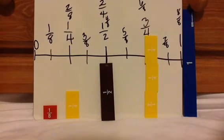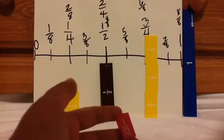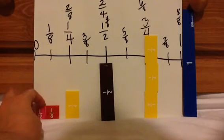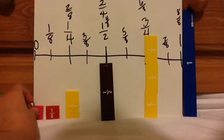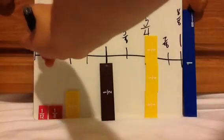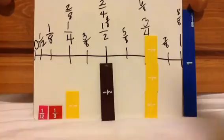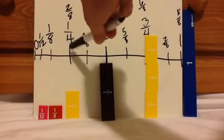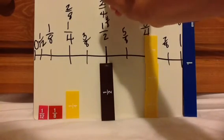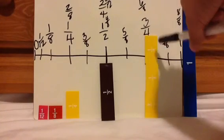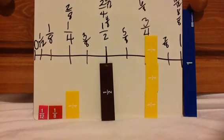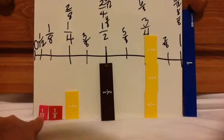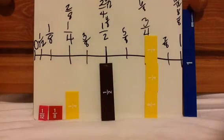Now suppose someone gave you 1 twelfth. If you notice, 1 twelfth is smaller than 1 eighth size-wise. So I know 1 twelfth is somewhere here — very close to 0. Then continuing: 2 twelfths, 3 twelfths, 4 twelfths, 5 twelfths, and 6 twelfths would be right at half. 7 twelfths, 8 twelfths, 9 twelfths, 10 twelfths, 11 twelfths, and 12 twelfths would be right at 1 whole. I'm not worried about labeling the entire number line — I just want you to see that 1 twelfth is so tiny that it is very close to 0.